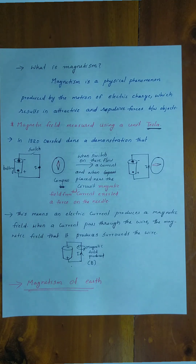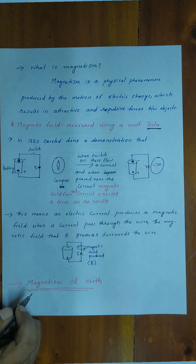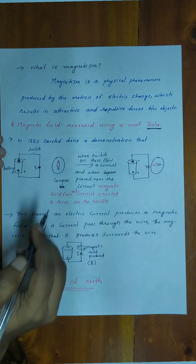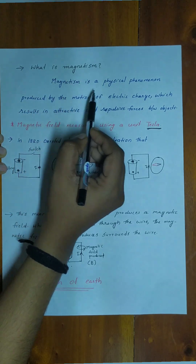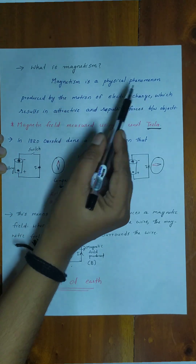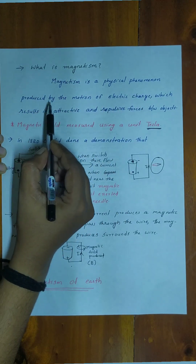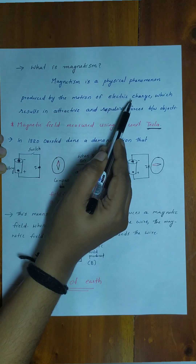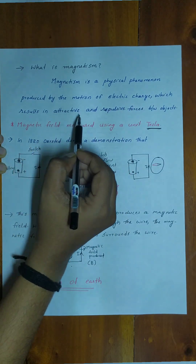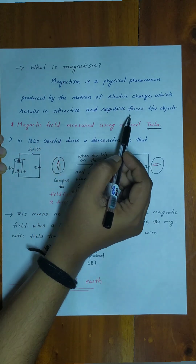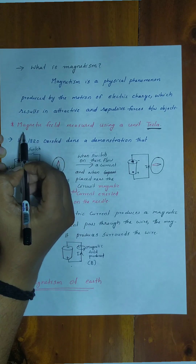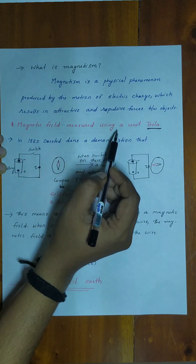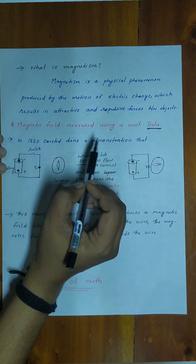Good morning to all. We are going to discuss magnetism. Magnetism is a physical phenomenon produced by the motion of electric charge, which results in attractive and repulsive forces between objects. The magnetic field is measured using the unit Tesla.